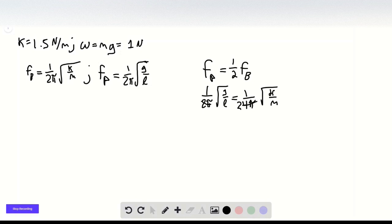1 over 2. And we get that square root of G over L equals 1 half square root of K over M, so L equals 4MG over K.